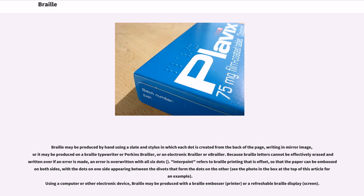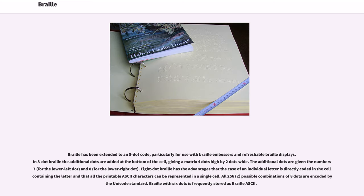Using a computer or other electronic device, Braille may be produced with a Braille embosser, printer, or a refreshable Braille display screen. Braille has been extended to an 8-dot code, particularly for use with Braille embossers and refreshable Braille displays. In 8-dot Braille the additional dots are added at the bottom of the cell, giving a matrix 4 dots high by 2 dots wide. The additional dots are given the numbers 7 for the lower left dot and 8 for the lower right dot. 8-dot Braille has the advantages that the case of an individual letter is directly coded in the cell, and that all the printable ASCII characters can be represented in a single cell. All 256 possible combinations of 8 dots are encoded by the Unicode standard. Braille with 6 dots is frequently stored as Braille ASCII.